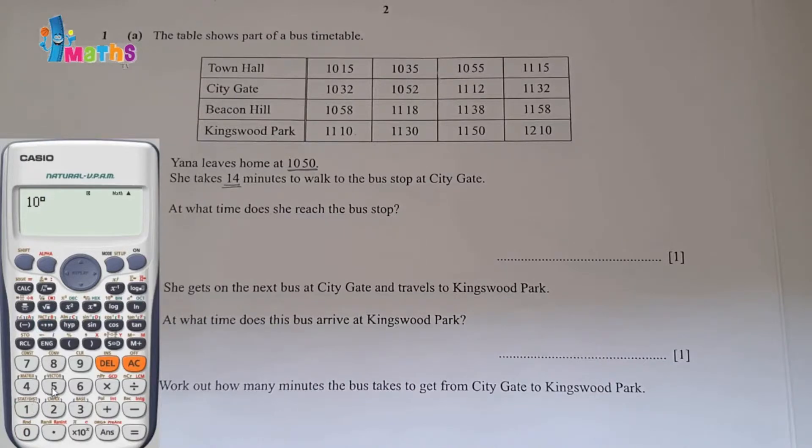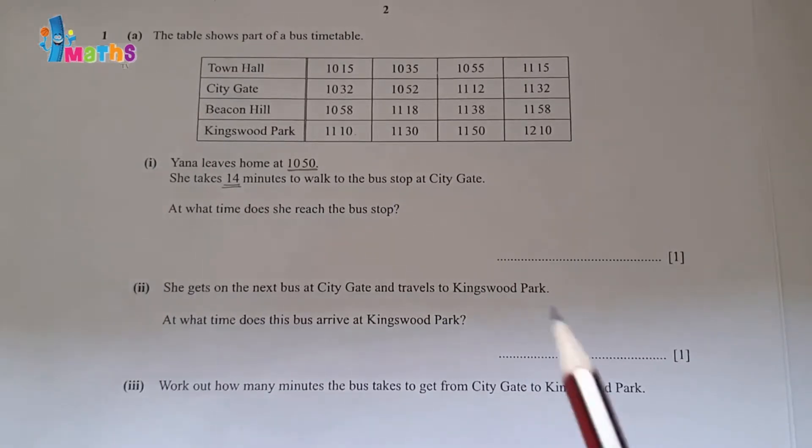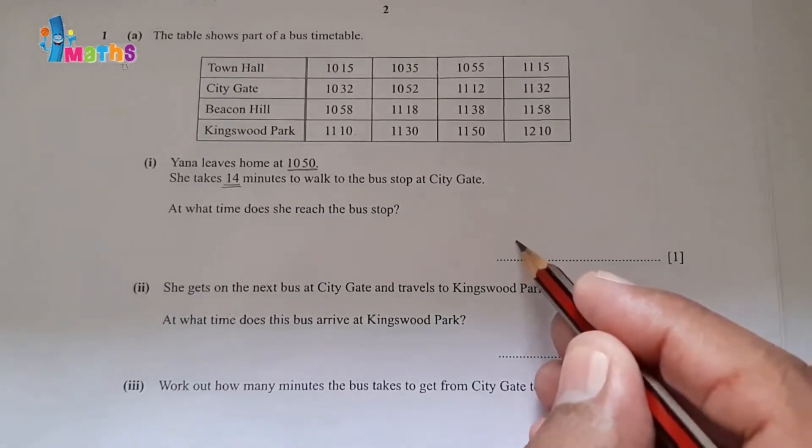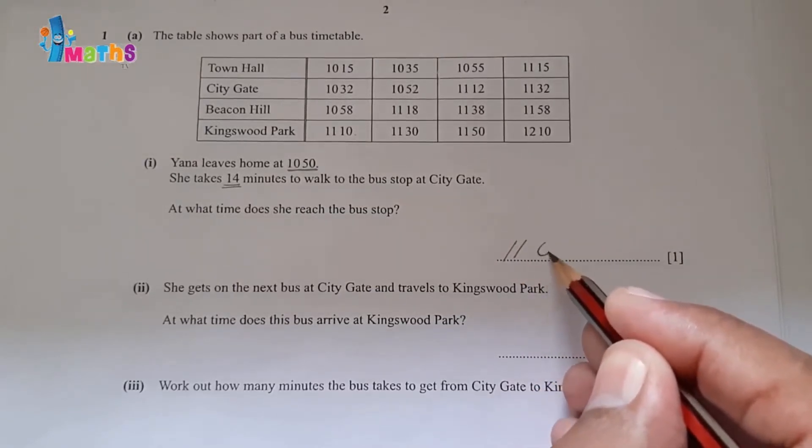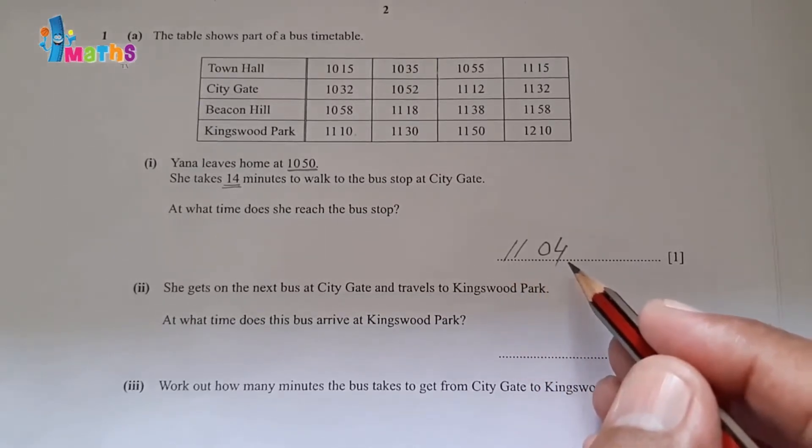10 hours 50 minutes plus 0 hours and 14 minutes is equal to 11 hours 4 minutes. So our answer will be 11:04.